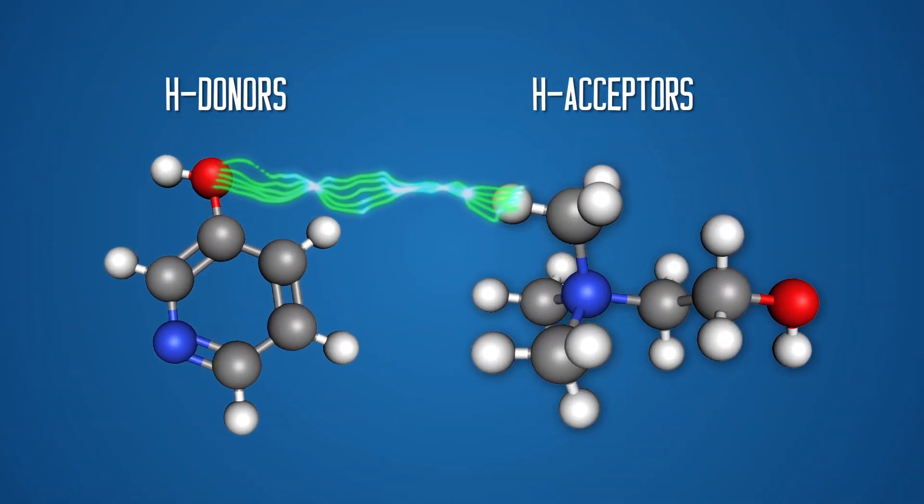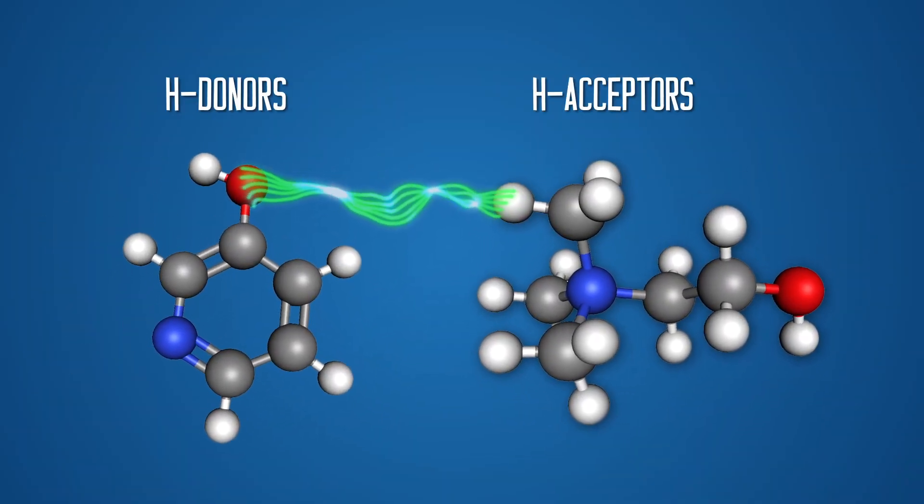This kind of ionic liquid forms when a proton donor interacts with a proton acceptor through hydrogen bonding.